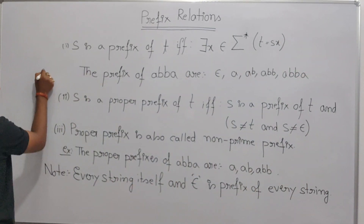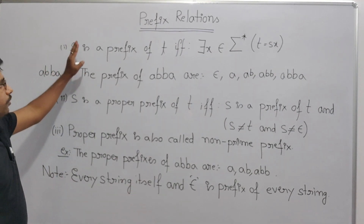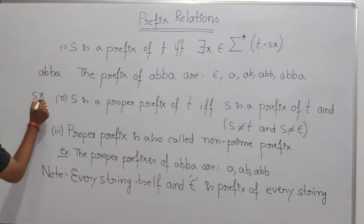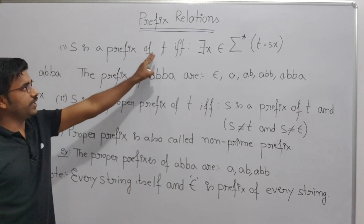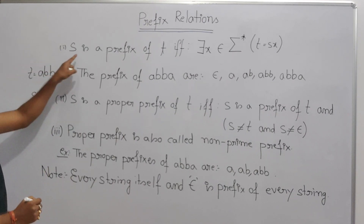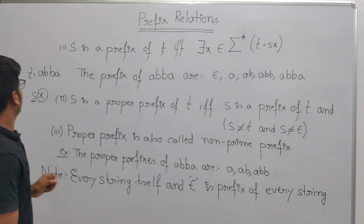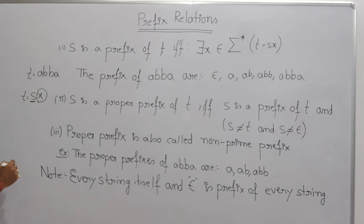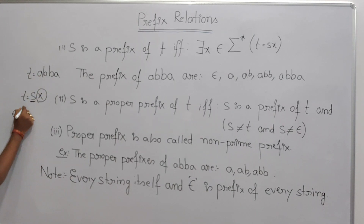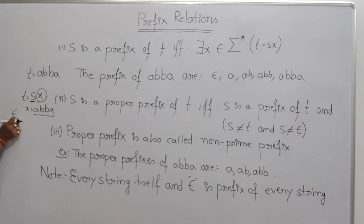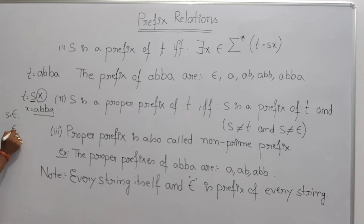For example, assume you have the string abba. If you are able to write this string t as s·x, then s is a prefix of t. So t equals s·x. Now I can assume x as epsilon, or I can assume x as the whole string abba. When s is epsilon, s is your prefix.